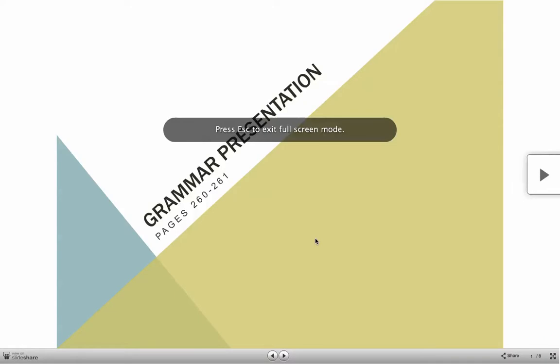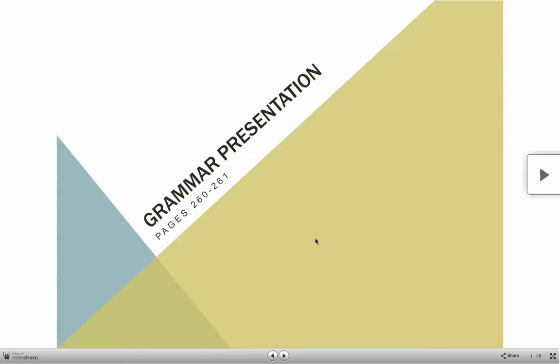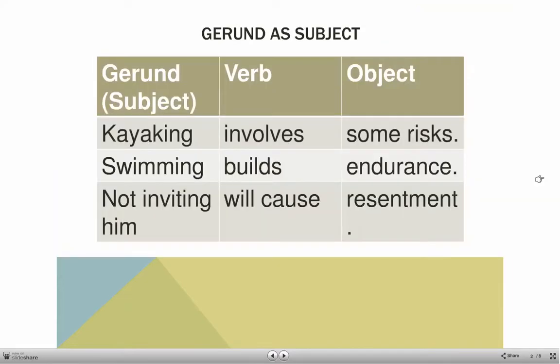This is the same grammar presentation that in your book is on pages 274 and 275. The page numbers indicated here are from an earlier edition of the book. We're talking about gerunds and how a gerund can do all the same things in a sentence that any noun does.